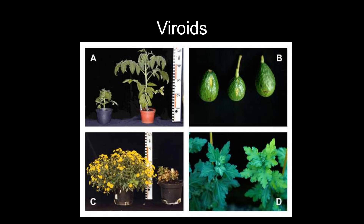Viroids are just infectious RNA molecules, and so far we've only found them infecting plants. Plants have an epidermis, and viroids get in through wounds — such as a bug eating a leaf. Examples include potato spindle tuber, avocado sunblotch, chrysanthemum stunt, and chrysanthemum chlorotic mottle.